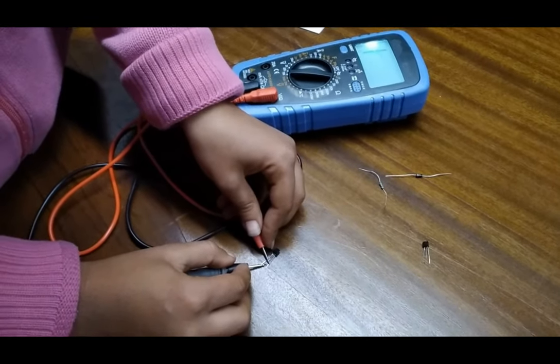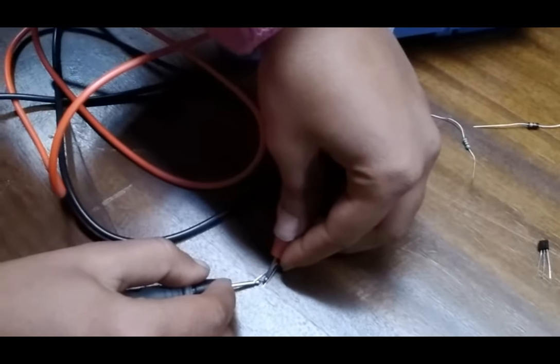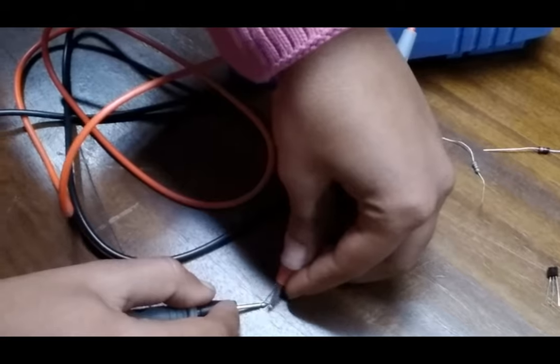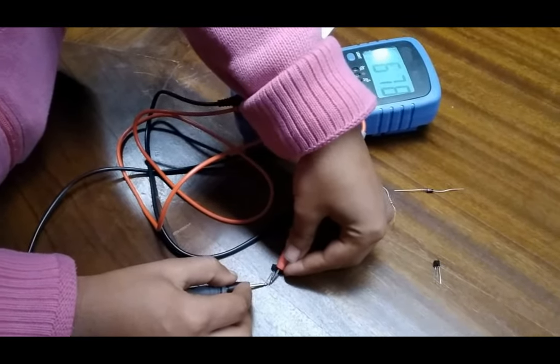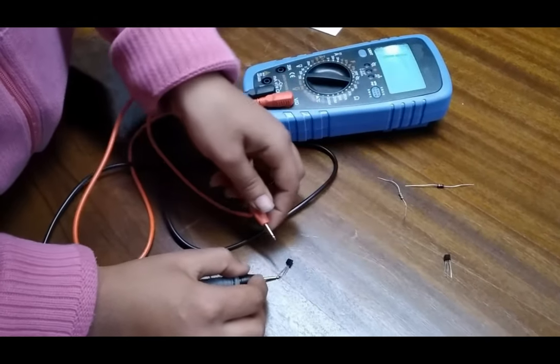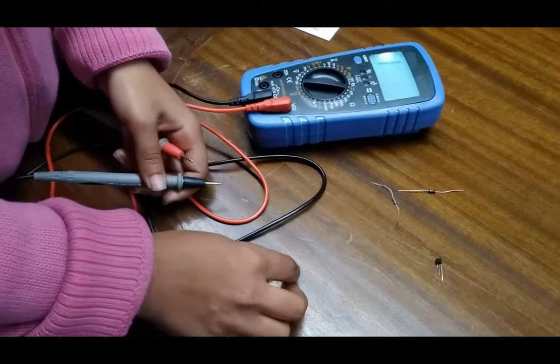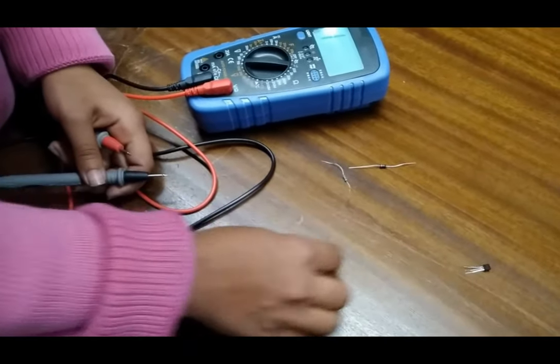Now we change our terminals with collector positive and base negative. Now a lower value of resistance is coming. So we can conclude that this transistor is of PNP type. Now we test another transistor.